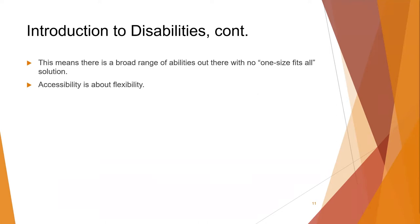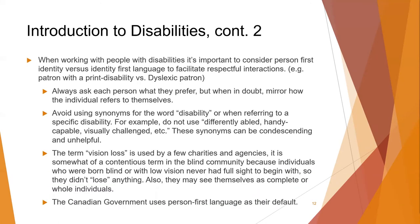There's a broad range of abilities out there, with no one-size-fits-all solution. Accessibility is about flexibility. When working with people with disabilities, it's important to consider person-first identity versus identity-first language to facilitate respectful interactions. For example, 'patron with a print disability' is person-first, versus 'dyslexic patron' which is identity-first. Always ask each person what they prefer, but when in doubt, mirror how the individual refers to themselves. Avoid using synonyms for the word disability — do not use 'differently abled,' 'handicapable,' 'visually challenged,' etc. These synonyms can be condescending and unhelpful.